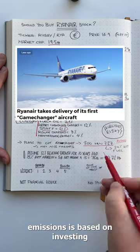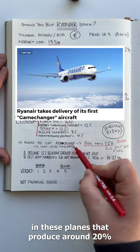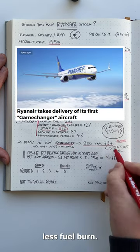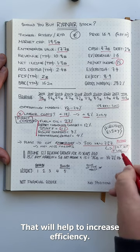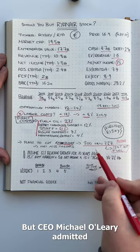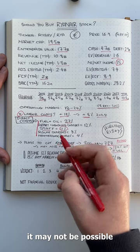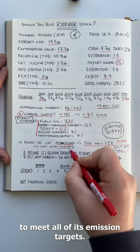Ryanair's plan to reduce emissions is based on investing in these planes that produce around 20% less fuel burnt. That will help to increase efficiency, but CEO Michael O'Leary admitted it may not be possible to meet all of its emission targets.